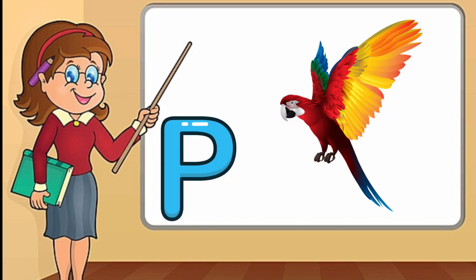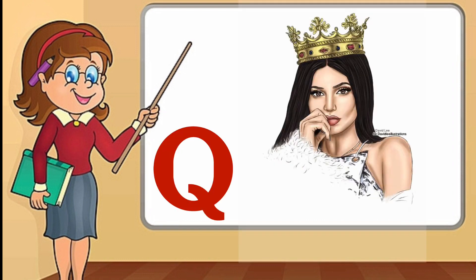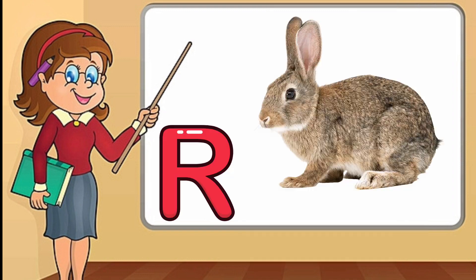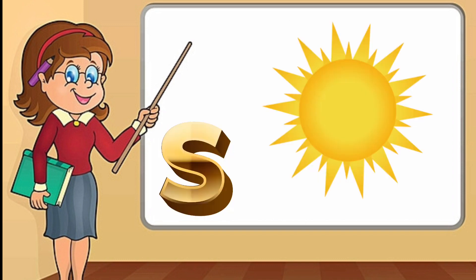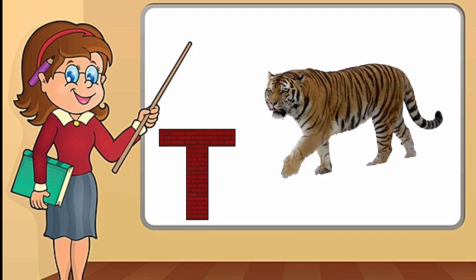P. P for parrot. Q. Q for queen. R. R for rabbit. S. S for sun. T. T for tiger.